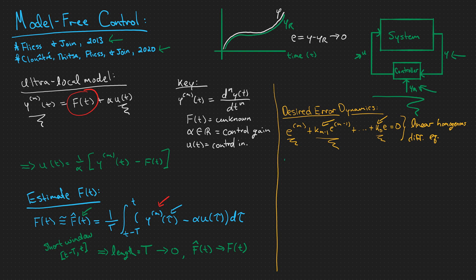If we look at a model of order 1, we will have from our ultralocal model y dot is equal to f of t plus alpha times u of t. And we would want error dynamics that looked like e dot plus kp e is equal to 0. Here I use kp instead of k0 because we tend to call a term that looks like this where we have a gain times the error, a proportional term. So I use the subscript p here.